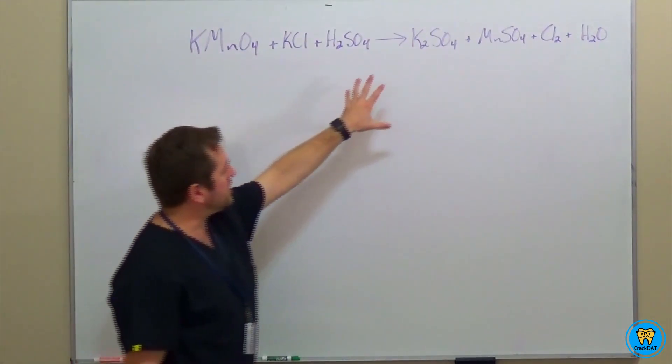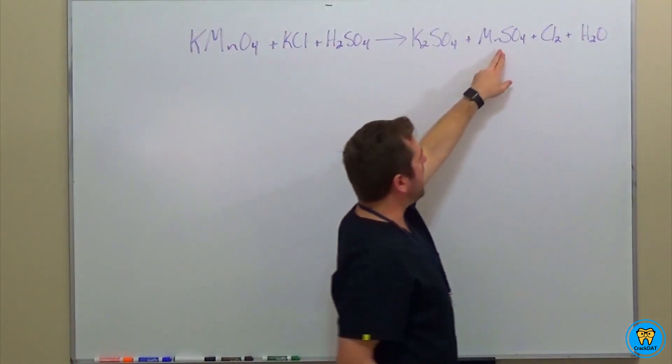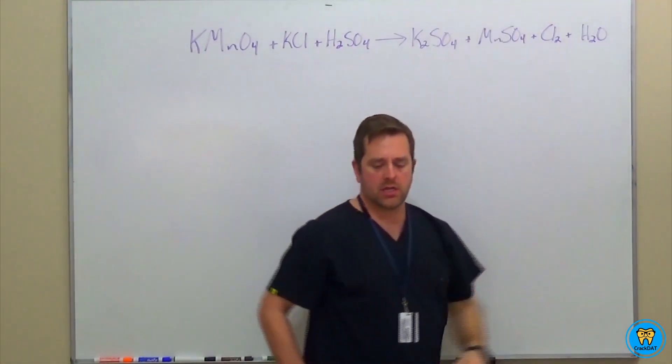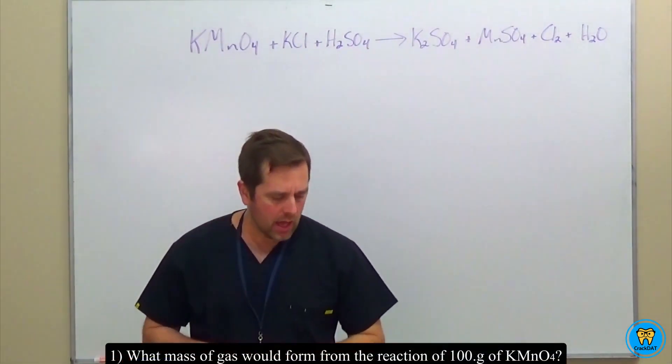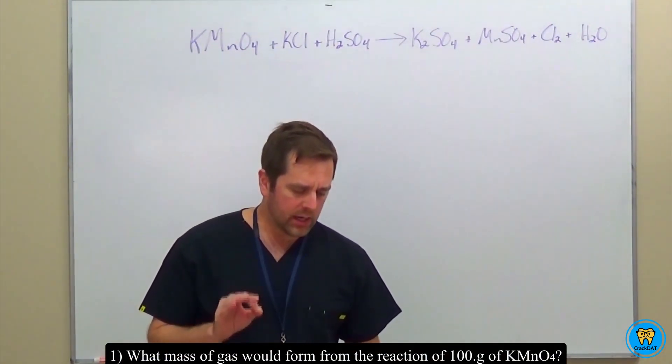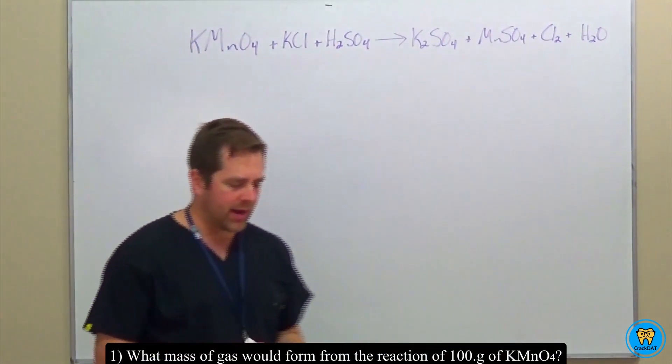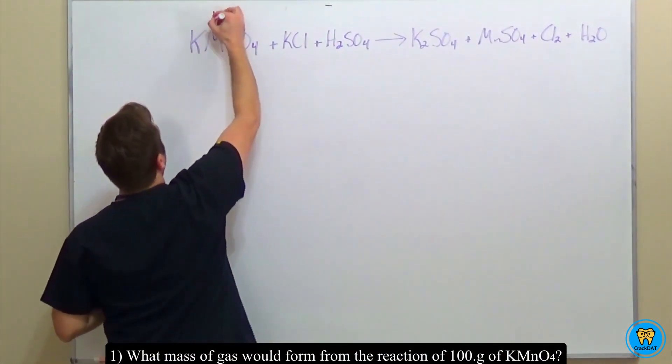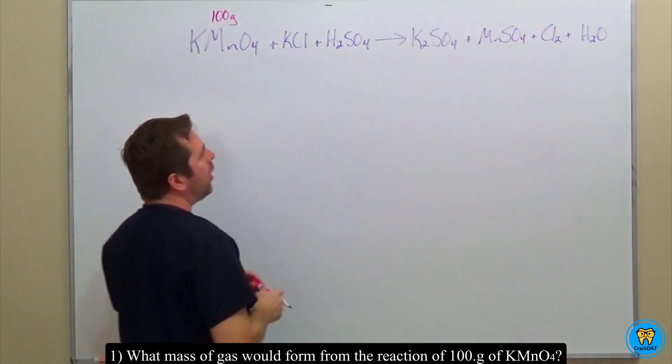They react to yield potassium sulfate, looks like manganese 2-sulfate, chlorine gas, and water. So the question says, what mass of gas would form from the reaction of 100 grams of potassium permanganate? So we're starting with 100 grams, and we want to know what...